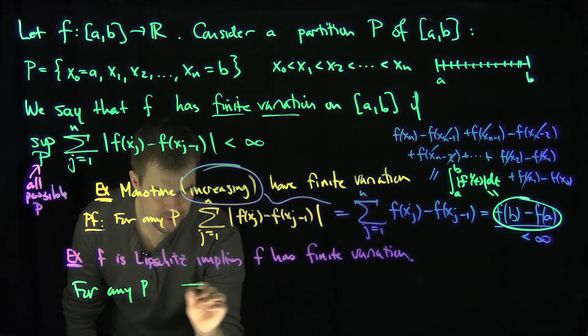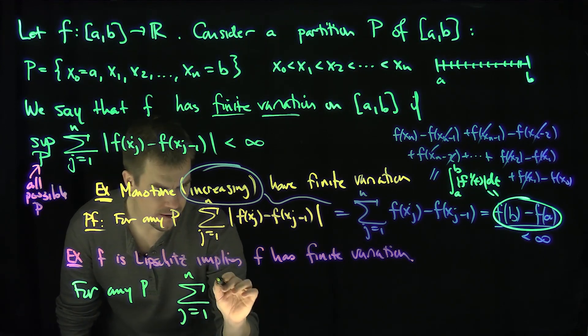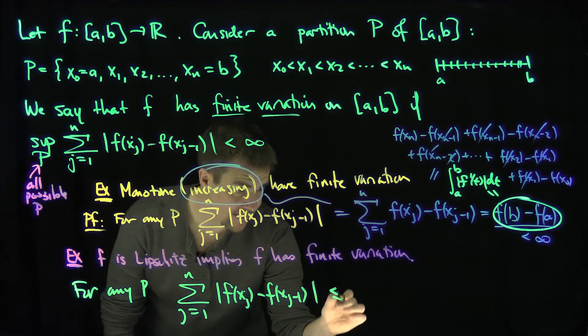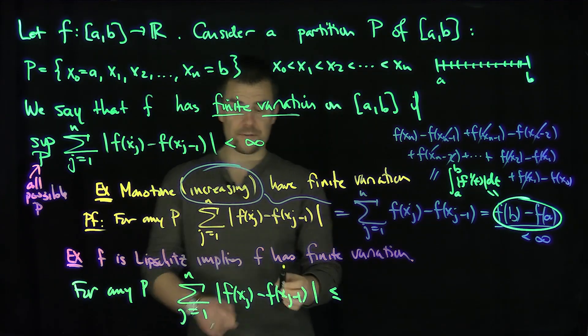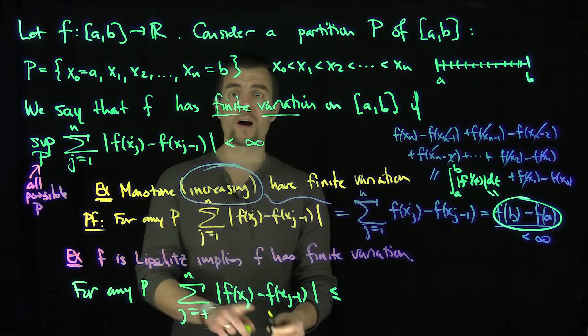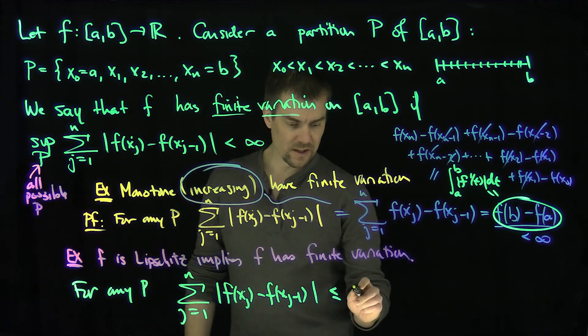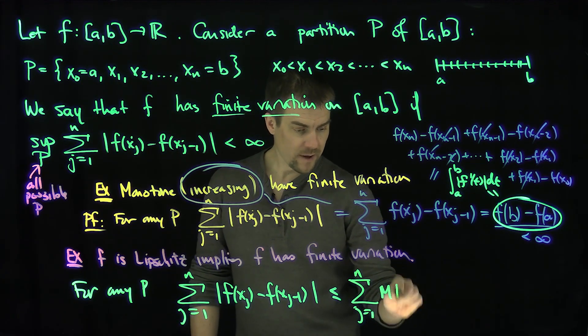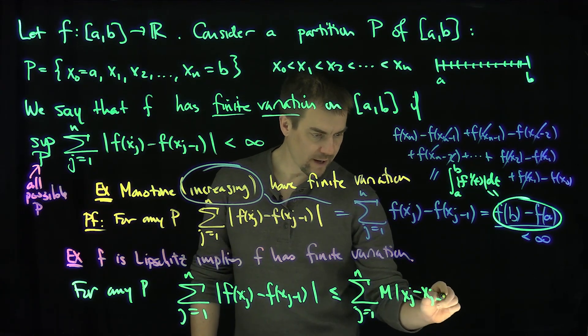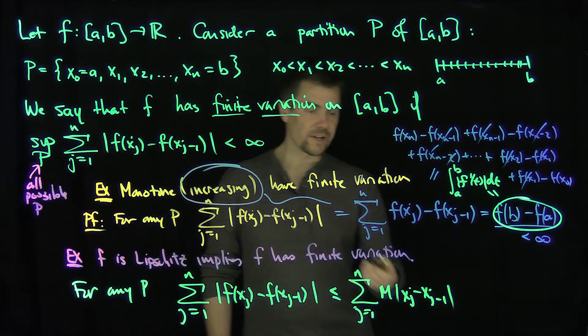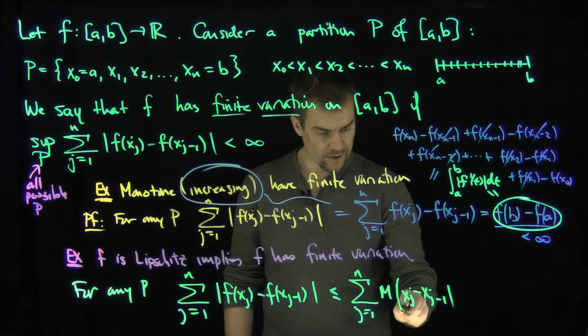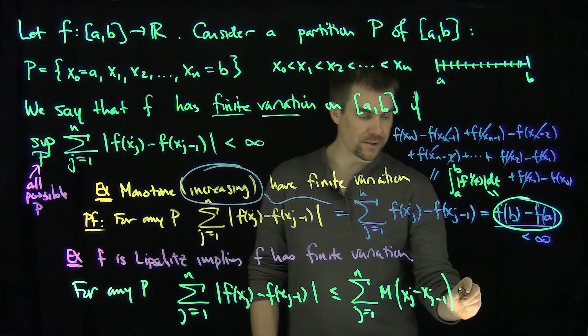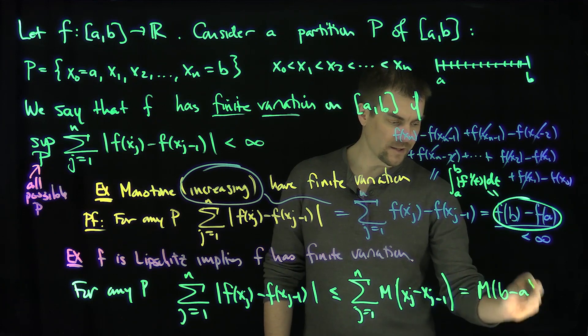this sum, the sum from j=1 to n of |f(xj) - f(xj-1)|, is less than or equal to what? Since f is Lipschitz, I can bound the difference by M times |x - y|. So this is less than or equal to the sum from j=1 to n of M|xj - xj-1|. I can drop the absolute value and turn them into parentheses because xj > xj-1. That sum will telescope to just b - a.